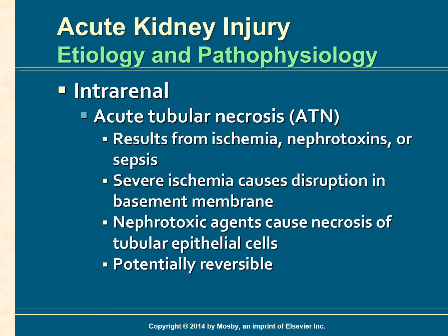Acute tubular necrosis, or ATN, is the most common cause of intra-renal AKI and is primarily the result of ischemia, nephrotoxins, or sepsis. Severe kidney ischemia causes a disruption in the basement membrane and patchy destruction of the tubular epithelium.